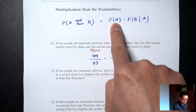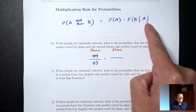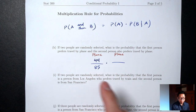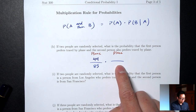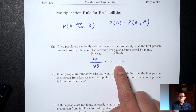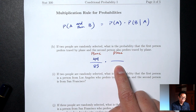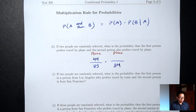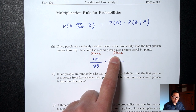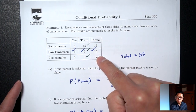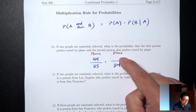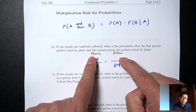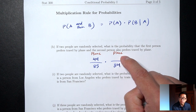For the second fraction, because I already selected one person for the first slot, I don't have the full 85 anymore — I'm down to 84 for the bottom. For the top, I also want a plane person. We said plane was 44, but I already used one plane person, so I have to reduce by one to 43. So the answer is 44/85 times 43/84.